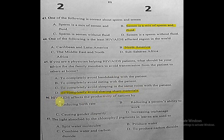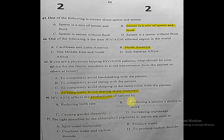Question forty-six: HIV affects the productivity of nations by what? It is not about birth rate or gender disparity specifically. Since productivity relates to work, the correct answer is by reducing a person's ability to work.